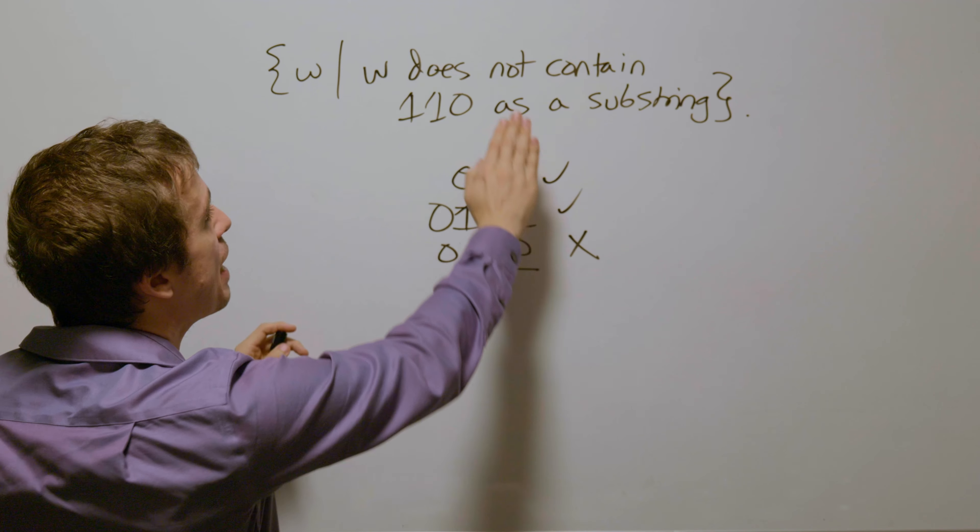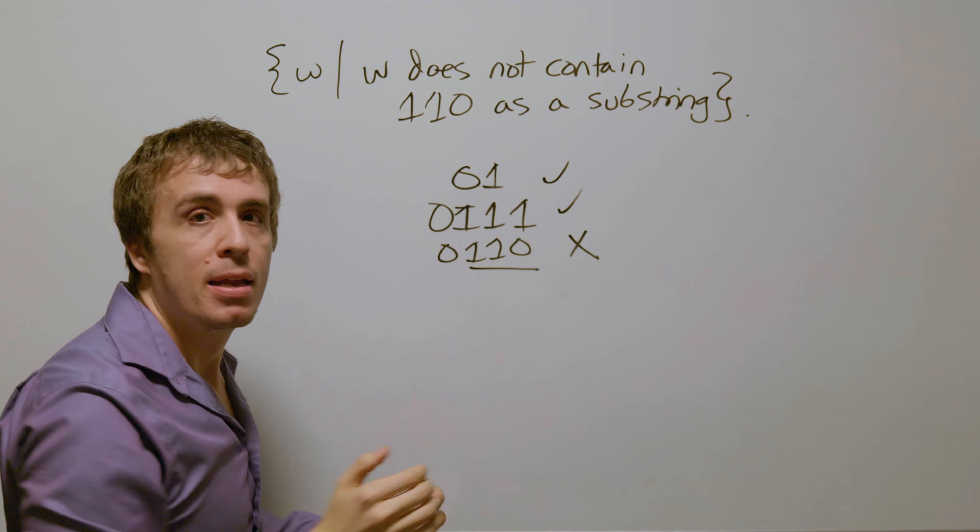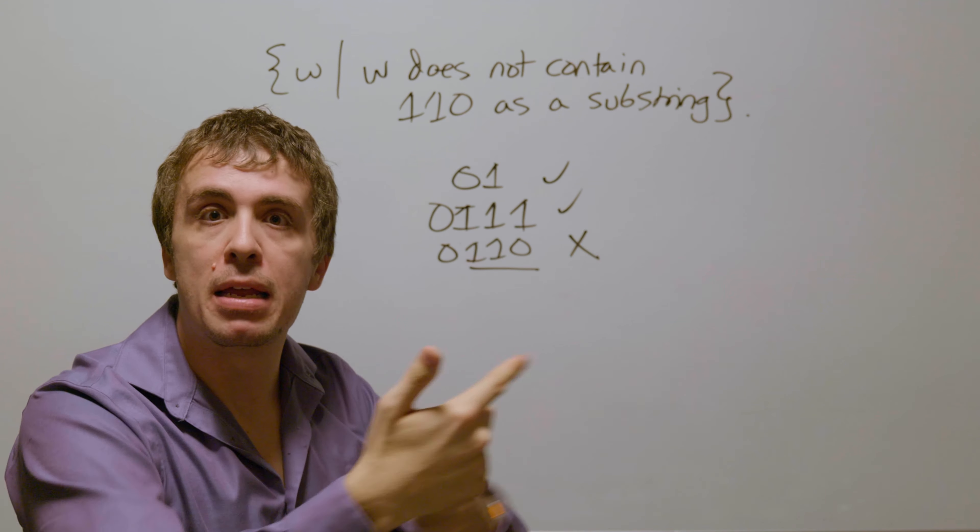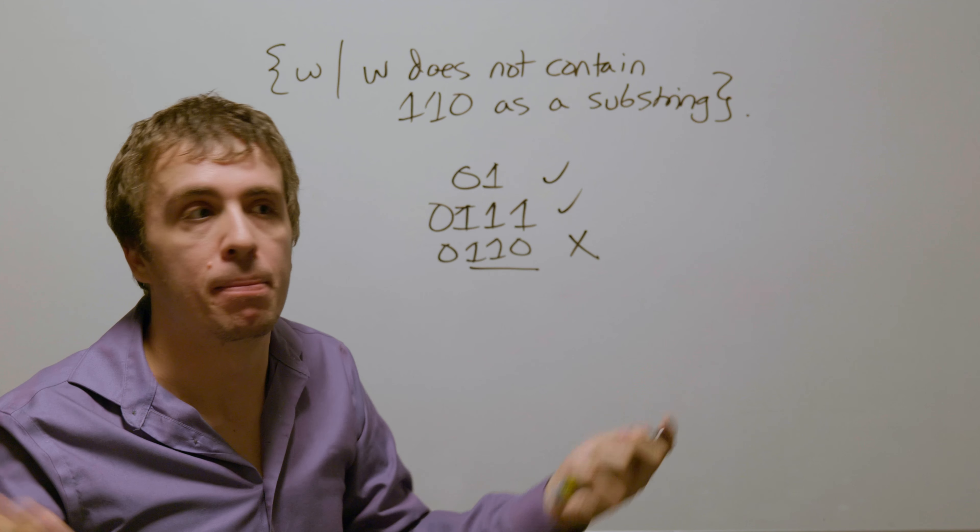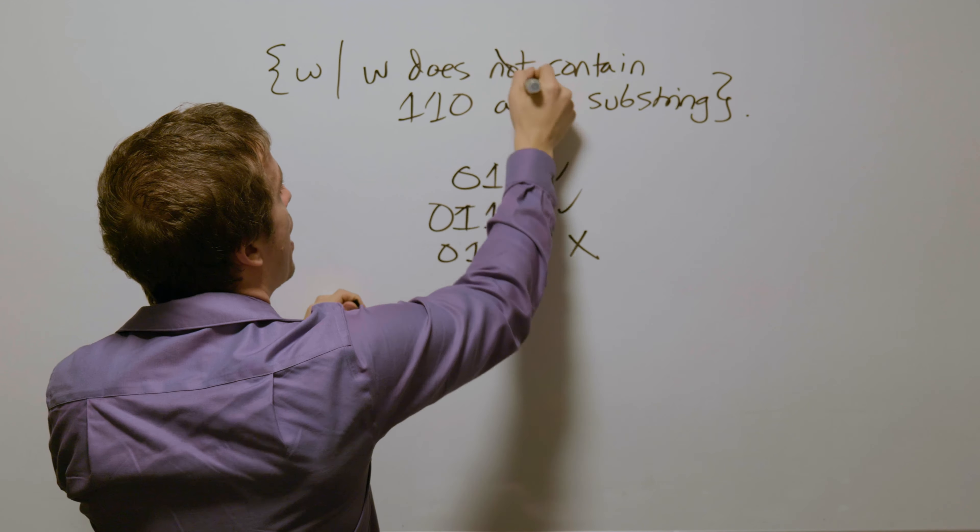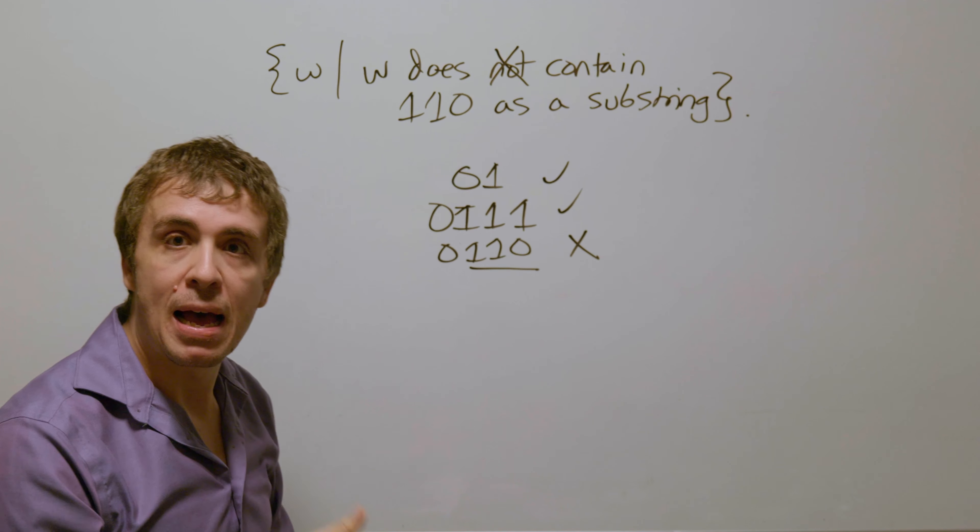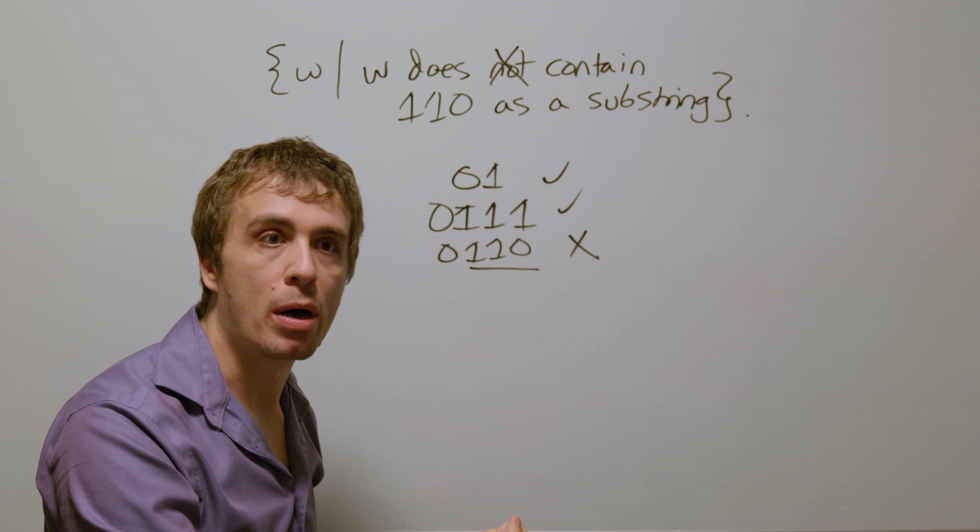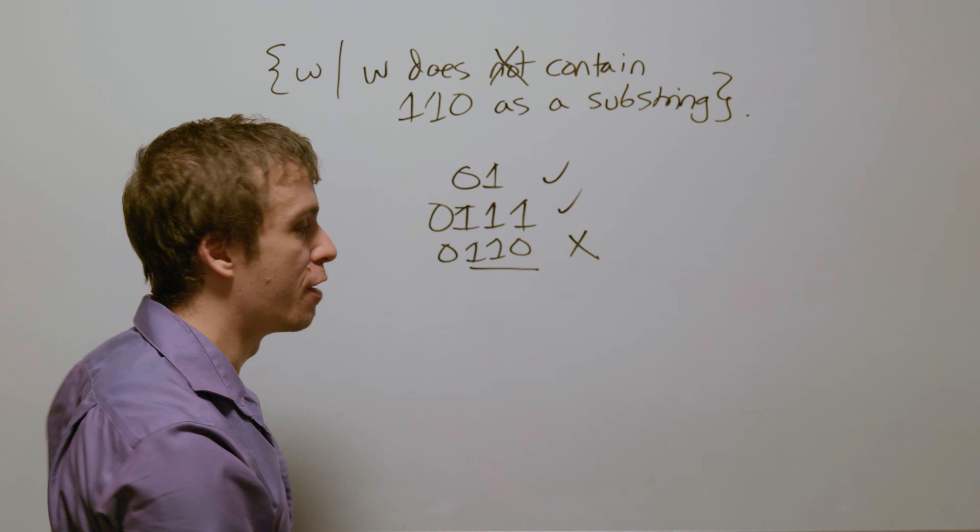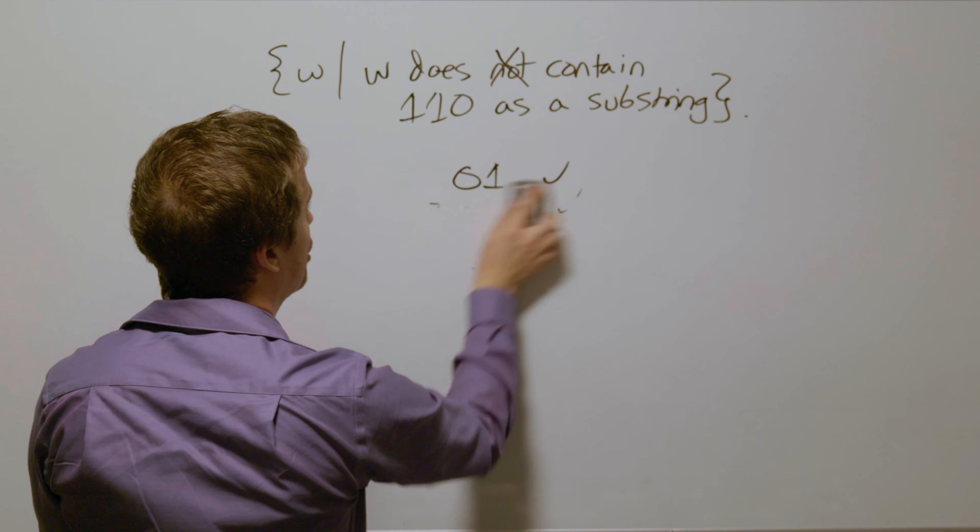All that we do is just take the DFA without the 'not' and then switch final and non-final states, and then we're done. So let's focus on the language where we have strings that contain 110 and then just flip final and non-final to make things much easier.